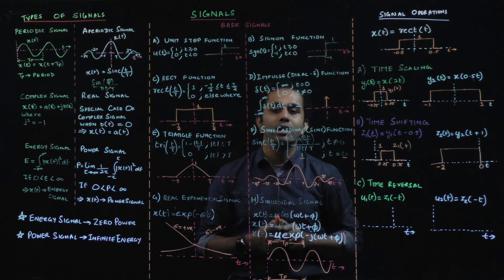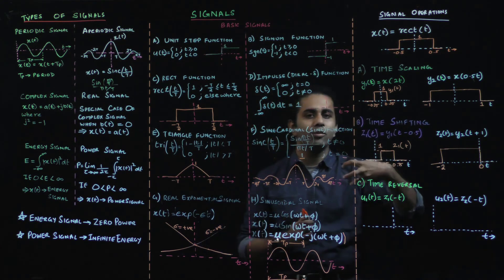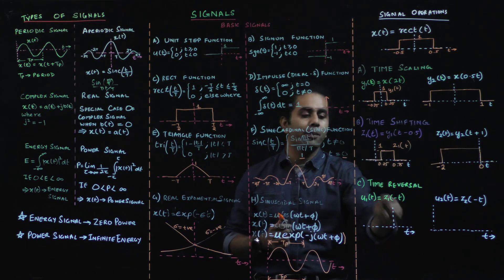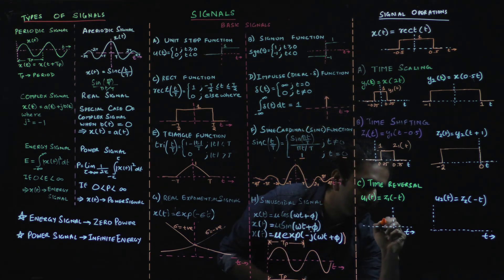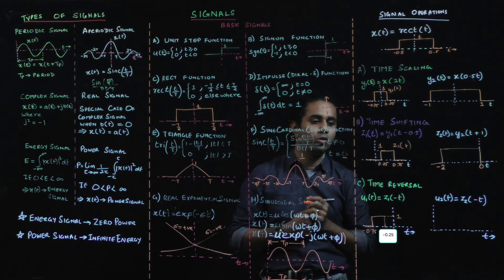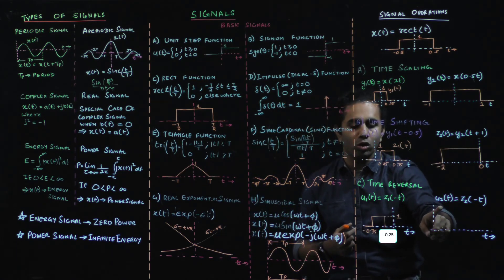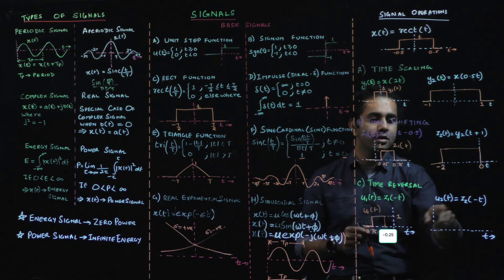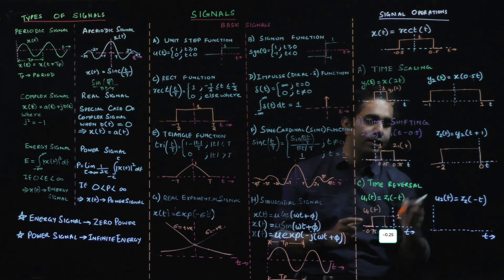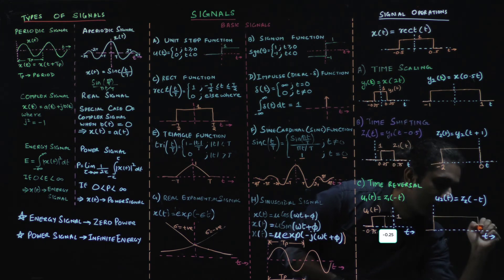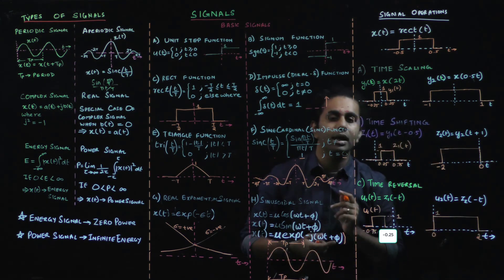The third operation is time reversal: we take the time variable t and replace it with minus t. For example, u1(t) = z1(−t). The amplitude still remains 1, but the waveform is reflected. Similarly, u2(t) = z2(−t) reflects that waveform about t = 0, again without changing the amplitude.